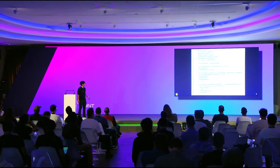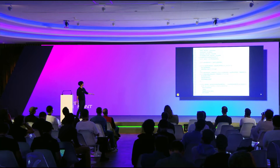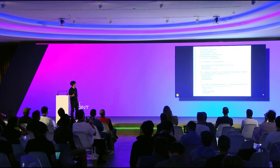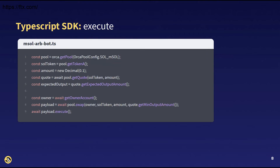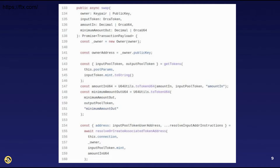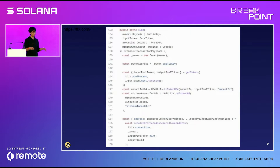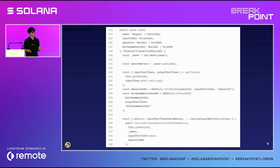Sorry for the resolution being a bit off — I had to paste the code here since my laptop wasn't working. This is the implementation for the swap function. So I'll explain the Solana account model in plain English. What we're doing here is creating an instruction. An instruction is just a series of bytes that define which program we want to execute, what instruction needs to be executed, what accounts have to be passed in, and what the instruction arguments are.